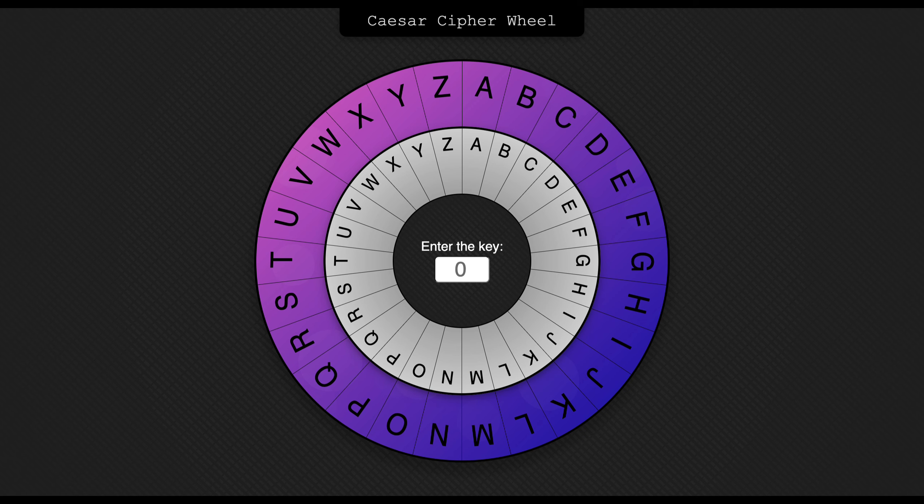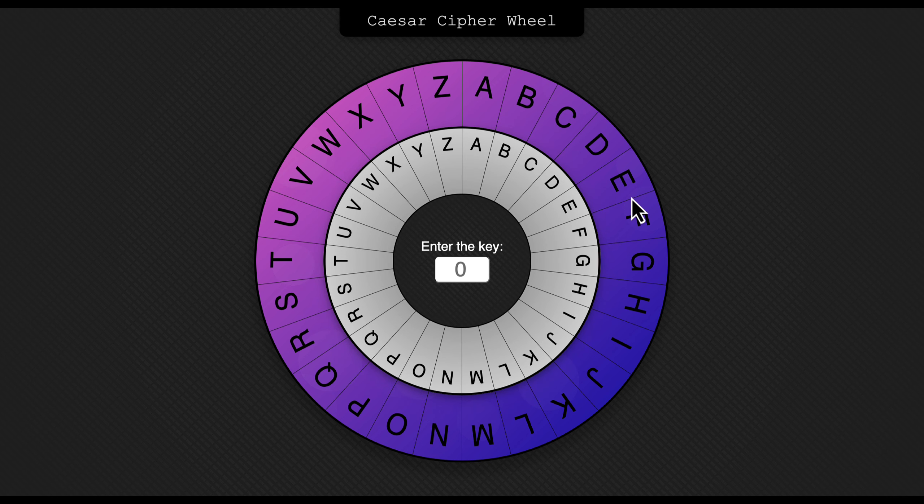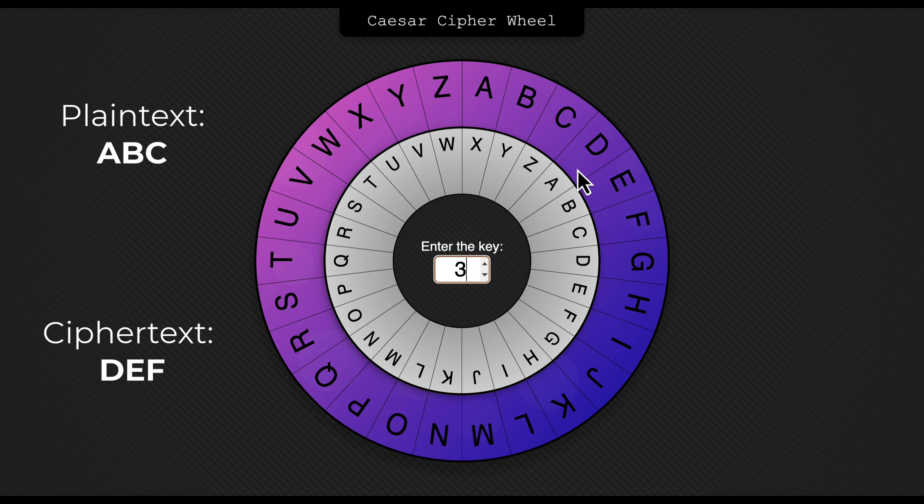This is a Caesar cipher wheel. The ring in the middle is the original message, or the plain text. And the purple ring on the outside is the cipher text. If we choose a key of 3, we can see that all As are now Ds, and all Bs are now Es.